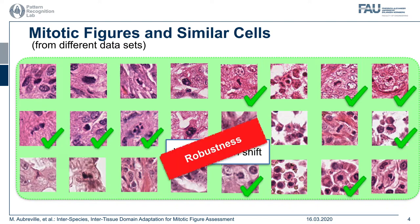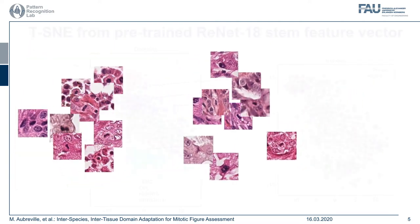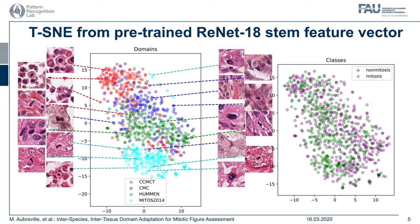Let us first investigate how strongly the domain shift affects a classification system trained on another dataset. What you see here is a TSNE representation of a feature vector of a ResNet-18 CNN pre-trained on ImageNet. Each circle represents a single image; the closer the circles, the more similar the metric perceives the images. We find clustering according to the dataset with only mild intersections. Unfortunately, the clustering does not appear along the labels — that is, whether it's a mitotic figure or not.